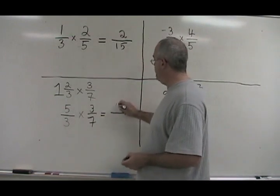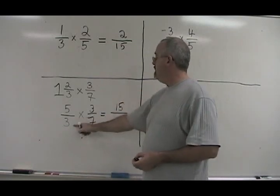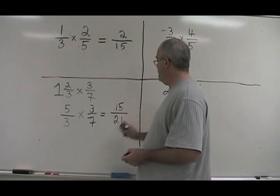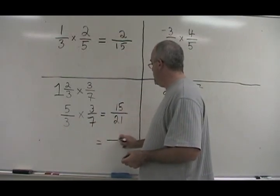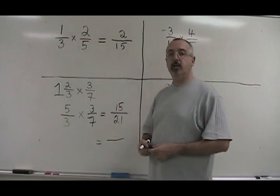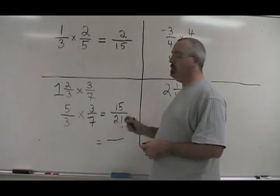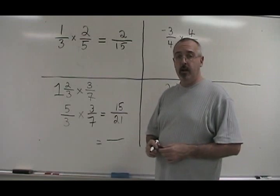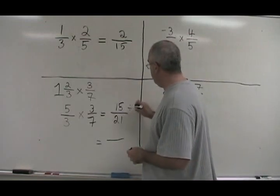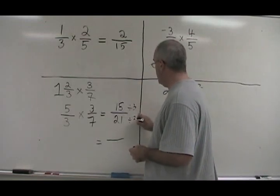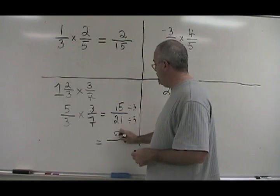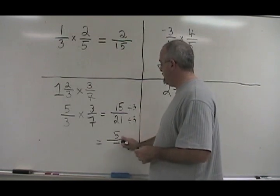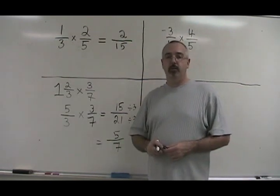5 times 3 is 15. 3 times 7 is 21. But this fraction can be reduced. 15 and 21 have a common factor of 3. If we divide both of them by 3, 15 divided by 3 is 5, 21 divided by 3 is 7. Our answer is 5 over 7.